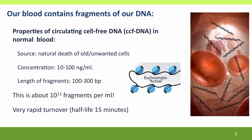Our blood contains fragments of our DNA just floating around loose — in fact, there's quite a bit of it. The source is cells that die in our bodies. Old cells are always being killed off and tidied away, but some of the DNA escapes and just floats around in the circulation. This is the standard cause of DNA in all healthy people.